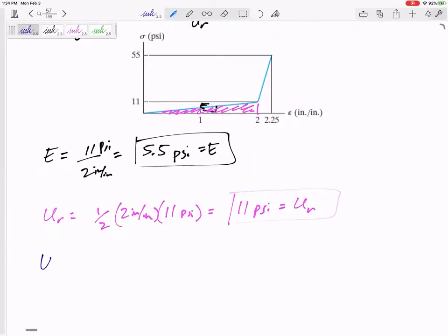Modulus of toughness would be this that I just calculated and that right there - the area under the whole curve. I already calculated the area under the elastic region is 11. Then how do you like to do trapezoids? The area of a trapezoid you can think of it as a rectangle with a triangle on top.